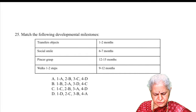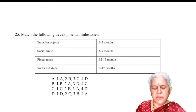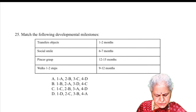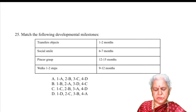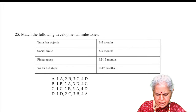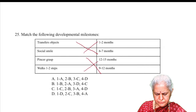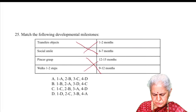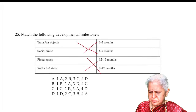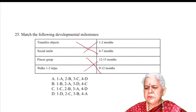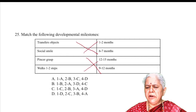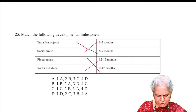Match the following developmental milestones: transfers object — 6 to 7 months; social smile — 1 to 2 months; pincer grasp — 9 to 12 months; walks 1–2 steps — 12 to 15 months. The answer is B: 1-B (transfers object at 6–7 months), 2-A (social smile at 1–2 months), 3-D (pincer grasp at 9–12 months), 4-C (walks 1–2 steps at 12–15 months). Everyone should know developmental milestones up to age 5.